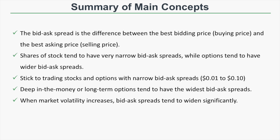To recap: the bid-ask spread is the difference between the best bidding price and the best asking price. Shares of stock tend to have very narrow spreads while options tend to have wider ones, so be more mindful of the bid-ask spread when trading options. Stick to trading stocks and options with narrow spreads — ideally one penny to at most 10 or 15 cents. Deep in-the-money or long-term options tend to have the widest spreads because they are more expensive and have less trading volume. When market volatility increases, bid-ask spreads tend to widen significantly.